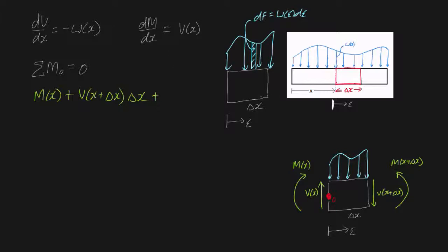But the moment is going to be quite interesting. The moment — dm, that's the moment due to this small slice — is actually going to be dF times by the distance to the slice. And what is that distance? It's just epsilon. So that is what our small moment is equal to. To find the total moment due to this entire distributed load, we integrate. So we're adding that to the integral of w(ψ) dψ times ψ, from limits 0 to Δx.